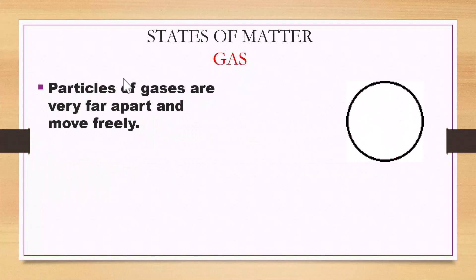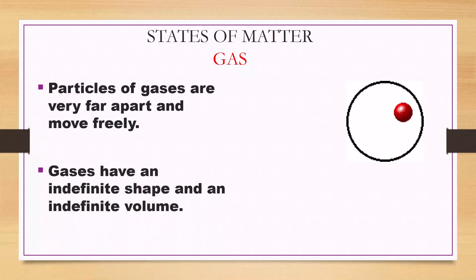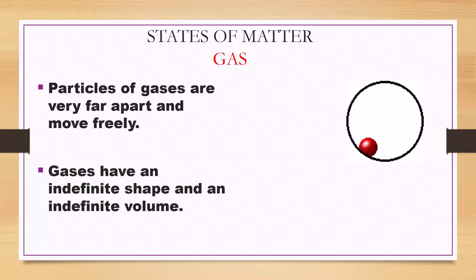Once matter has reached a gas state, particles are very far apart and move freely. Gases have an indefinite shape and an indefinite volume, meaning they can be compressed.